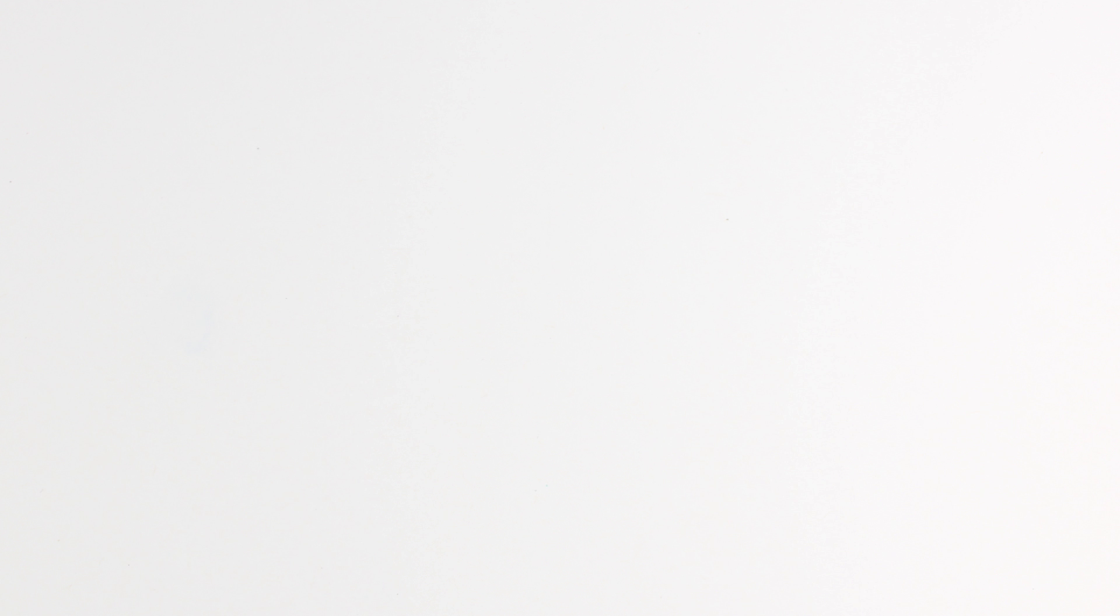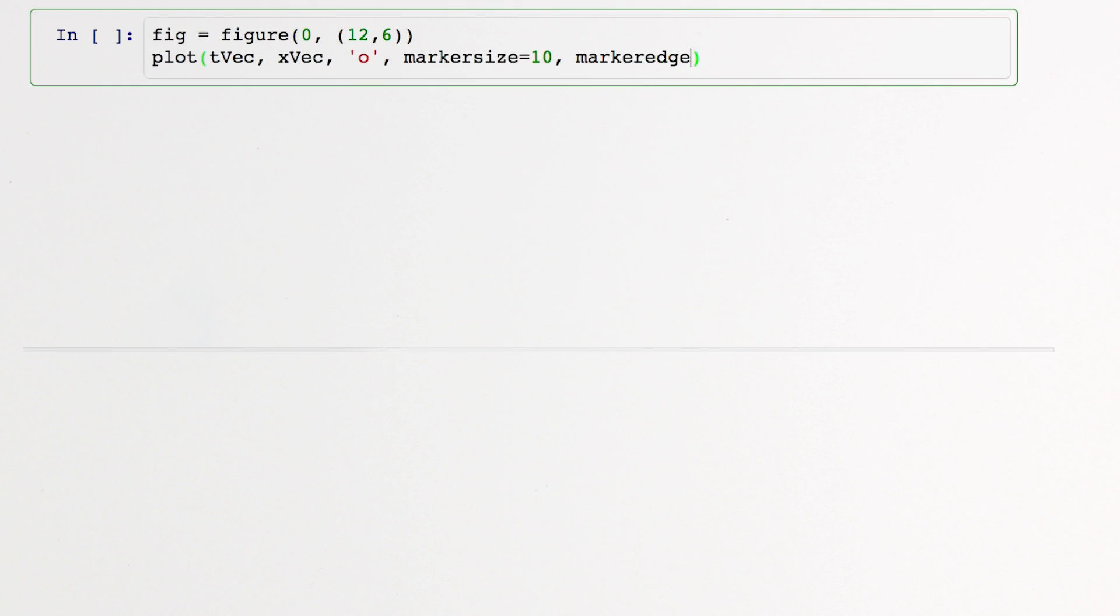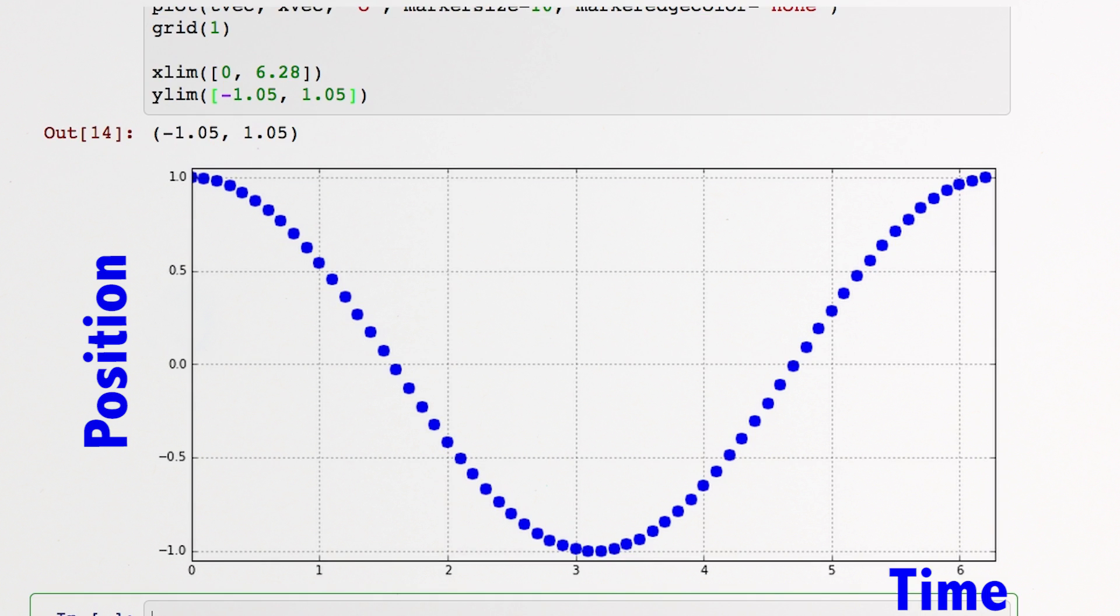When plotting our points, we get to choose which quantities to plot on which axes. When we plot time on an axis, we are converting it to a spatial dimension, and we see a nice waveform.